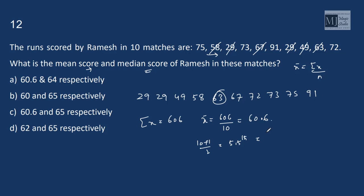That is 5th element, 63 plus 6th element, 67 by 2, that is 65. So 65 is the median and mean is 60.6, option C fits in.